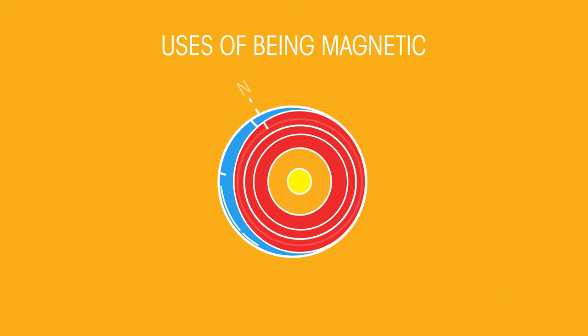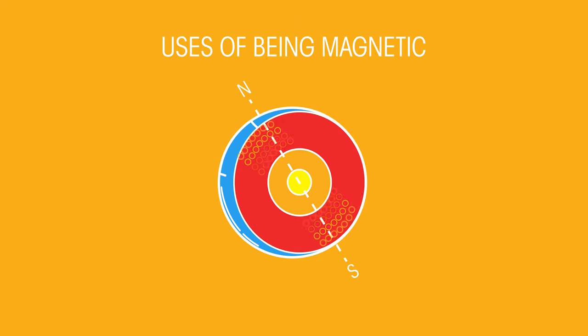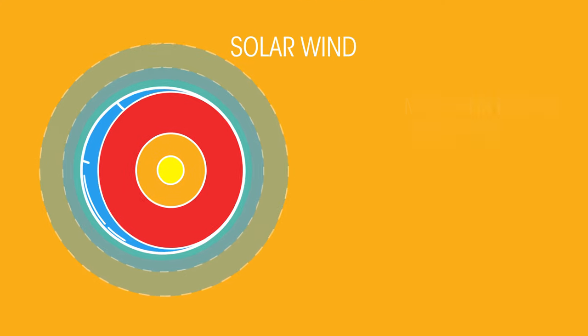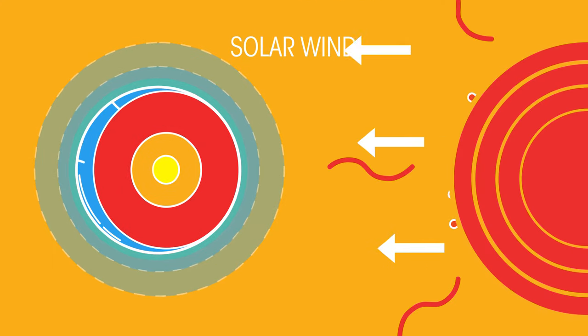So does the Earth being a giant magnet do anything useful? Well, it plays a big part in maintaining Earth's atmosphere. Solar wind is a flow of charged particles coming from the Sun.